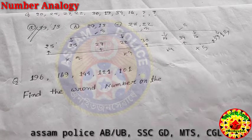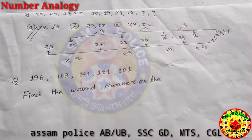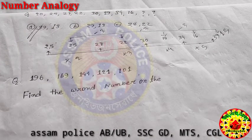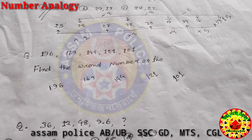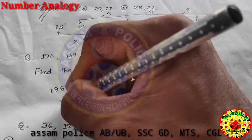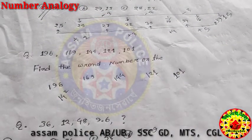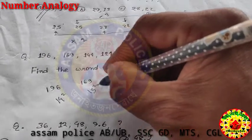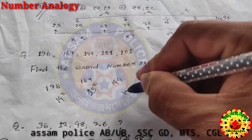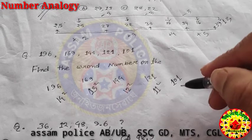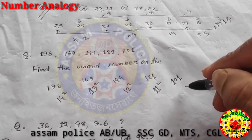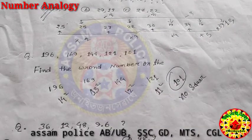Next question: 196, 169, 141, 121, 101. Find the wrong number. We check squares: 14 squared is 196, 13 squared is 169, 12 squared is 144 — but we have 141, which is wrong. 11 squared is 121, 10 squared is 100 — but we have 101. So the wrong number is 101.